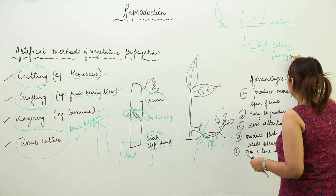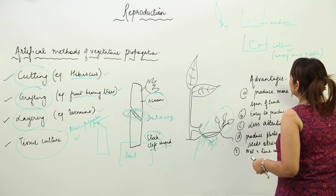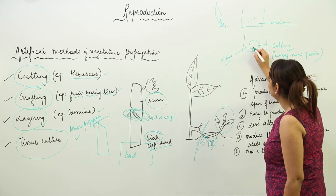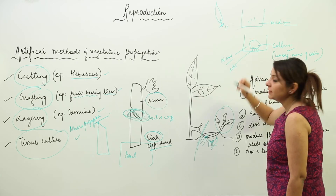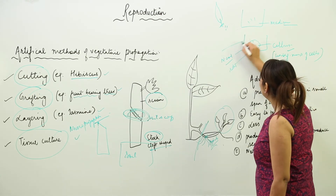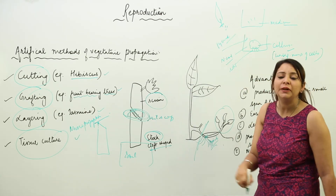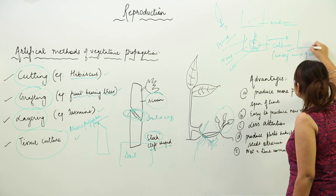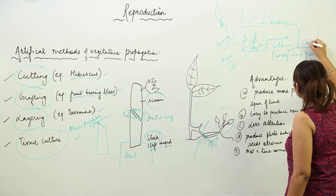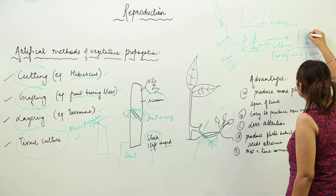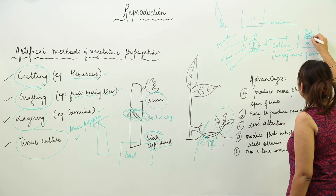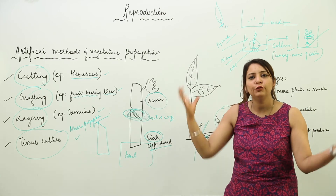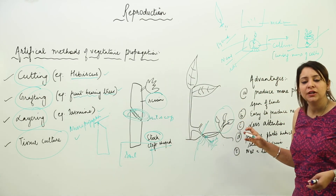We provide the medium with all nutritive conditions. The callous then develops roots. Next, we provide all the physical conditions required for plant growth, and in a span of time it develops a shoot as well, forming a tiny plantlet. When the tiny plantlet is formed, it is transferred to the main pot, where under favorable conditions it gives rise to a fully grown plant.